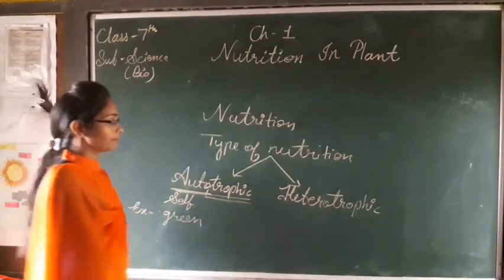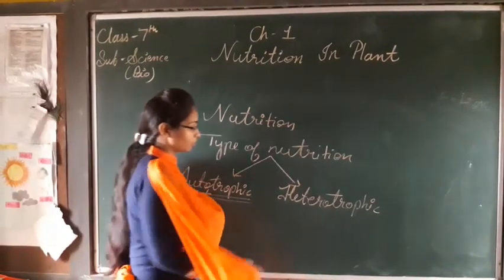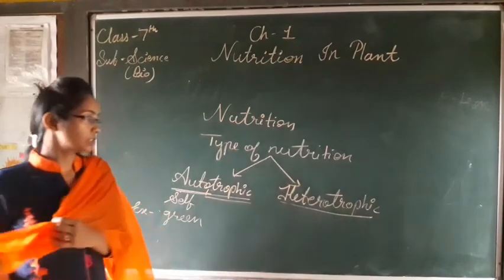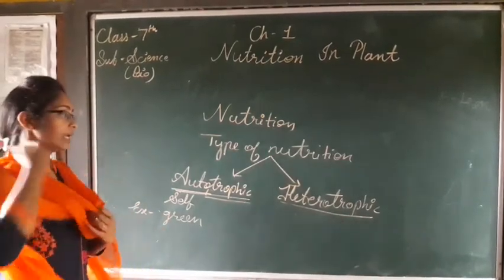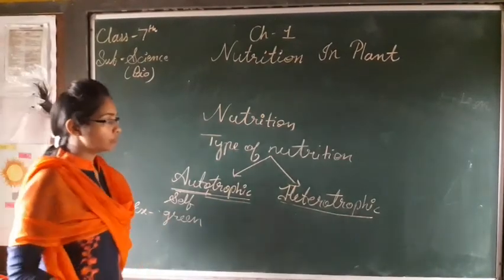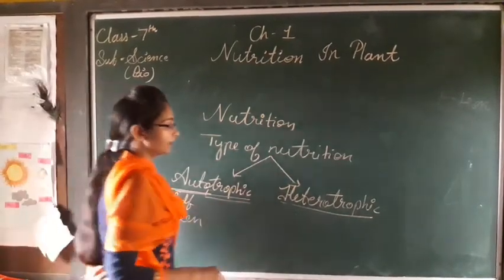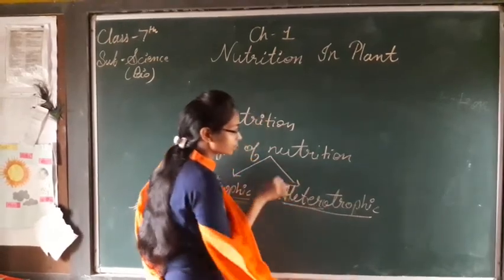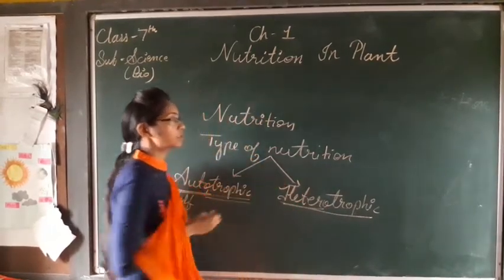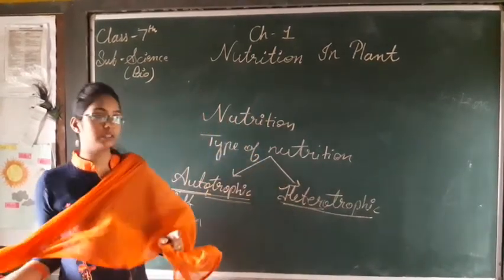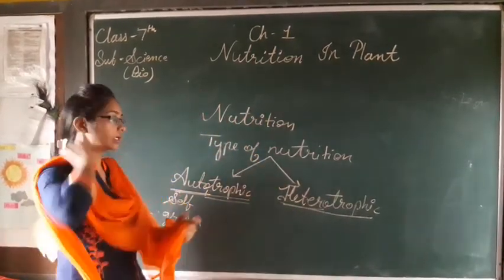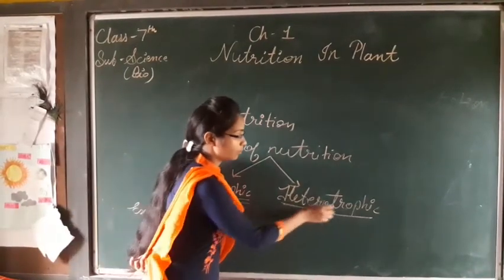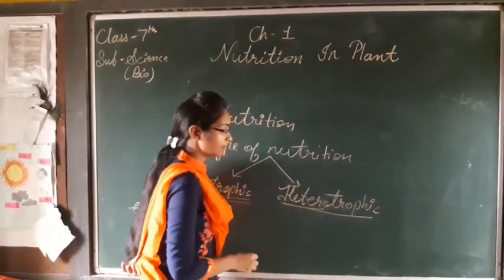The second type is heterotrophic mode of nutrition. In this type, organisms cannot prepare their own food; they depend on others for their food. 'Hetero' means different and 'troph' means nourishment, meaning they get nourishment from other sources. So this is called heterotrophic mode of nutrition.